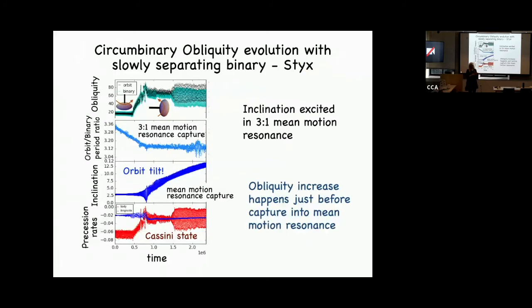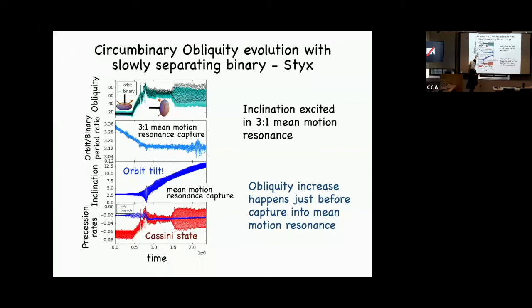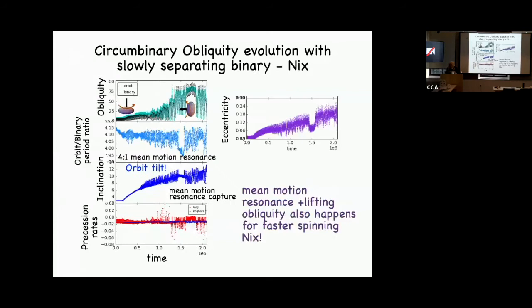Instead of using tidal spin-down, we slowly expanded the Pluto-Charon system, which moves the 3:1 orbital resonance past the satellite. In a Styx simulation, as the system is captured into the 3:1 resonance — the orbit period divided by the binary period shown stabilizing — the orbit simultaneously tilts: the longitude of the ascending node is involved, and at the same time the obliquity just really flips. This is a resonant mechanism involving a mean-motion resonance that rapidly changes obliquity. We saw the same thing happen in the Hydra simulations.